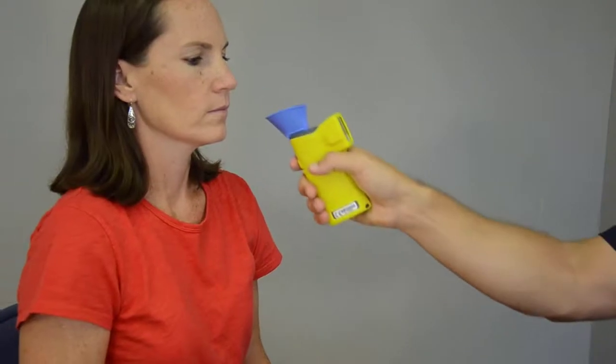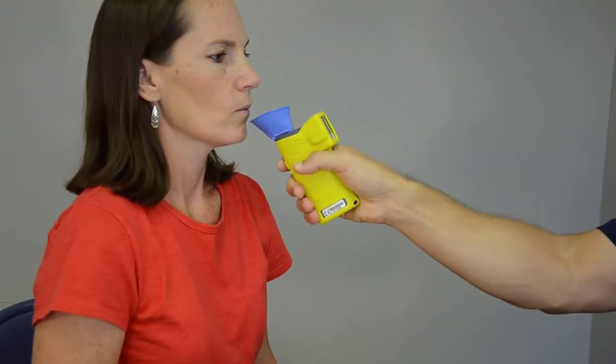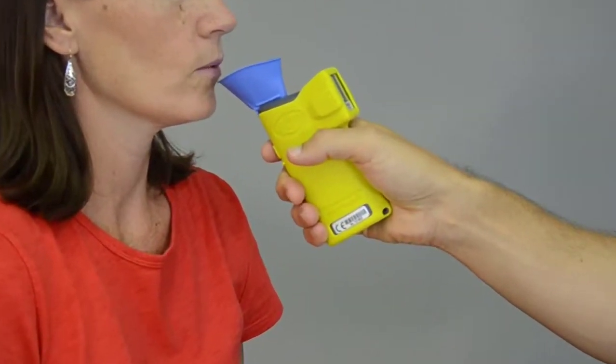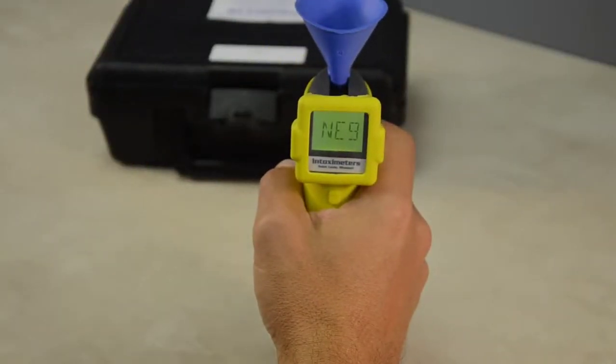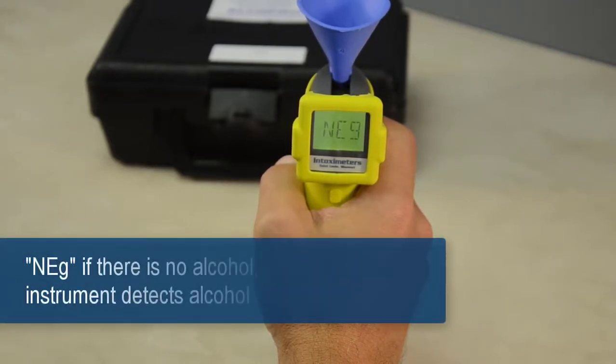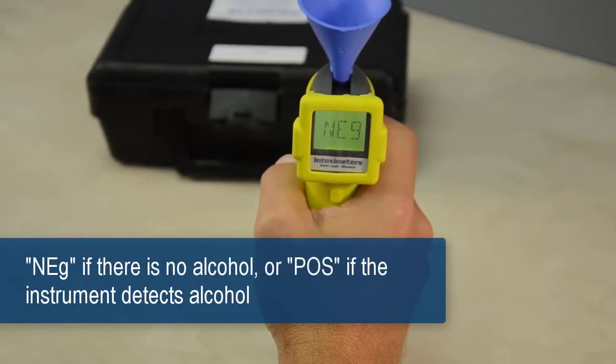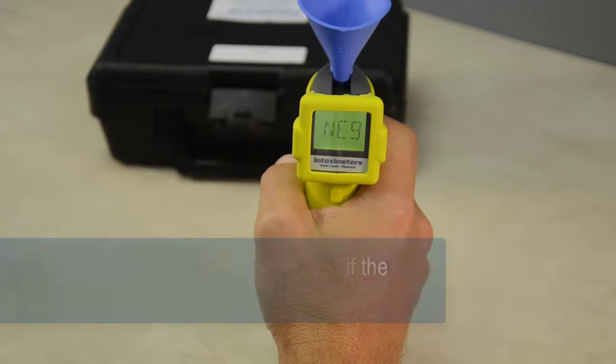Hold the AlkaSensor FST several inches from the subject's mouth and instruct the subject to blow into the cup. The AlkaSensor FST will automatically capture a sample of the subject's breath and display NEG if there is no alcohol present or POS if the instrument detects alcohol.